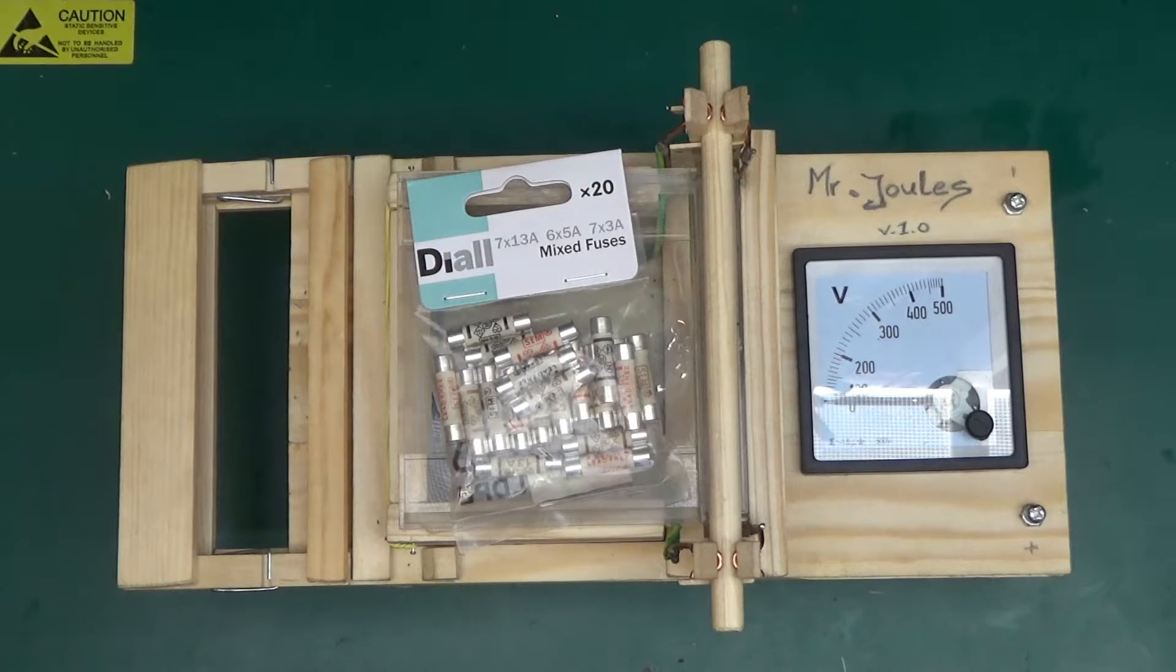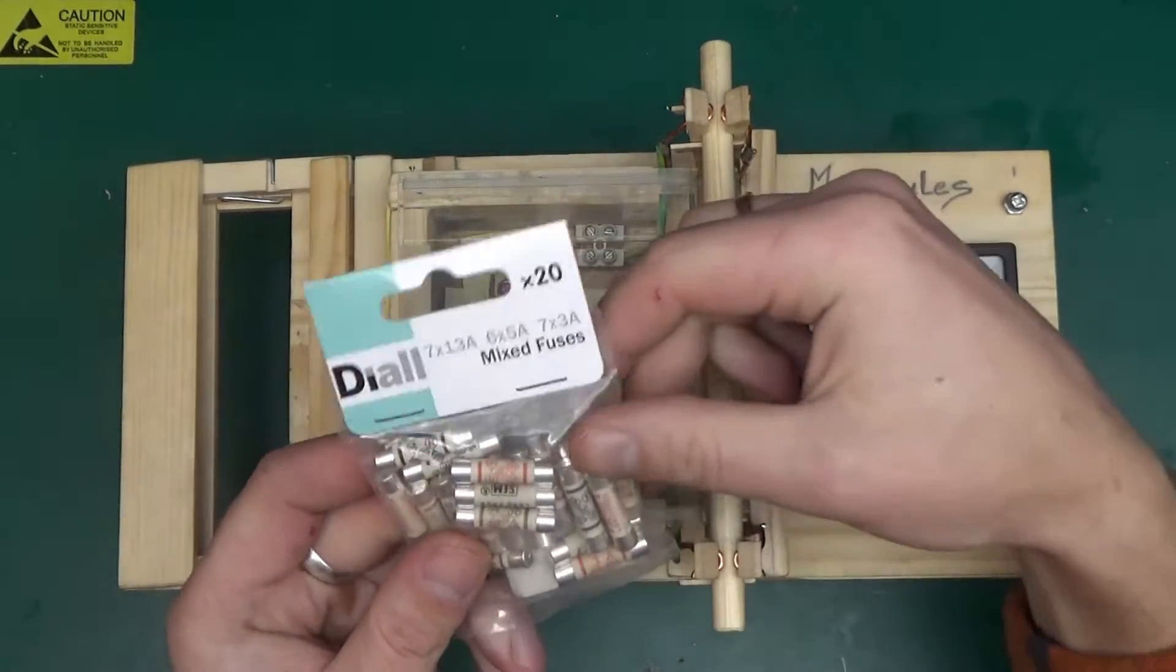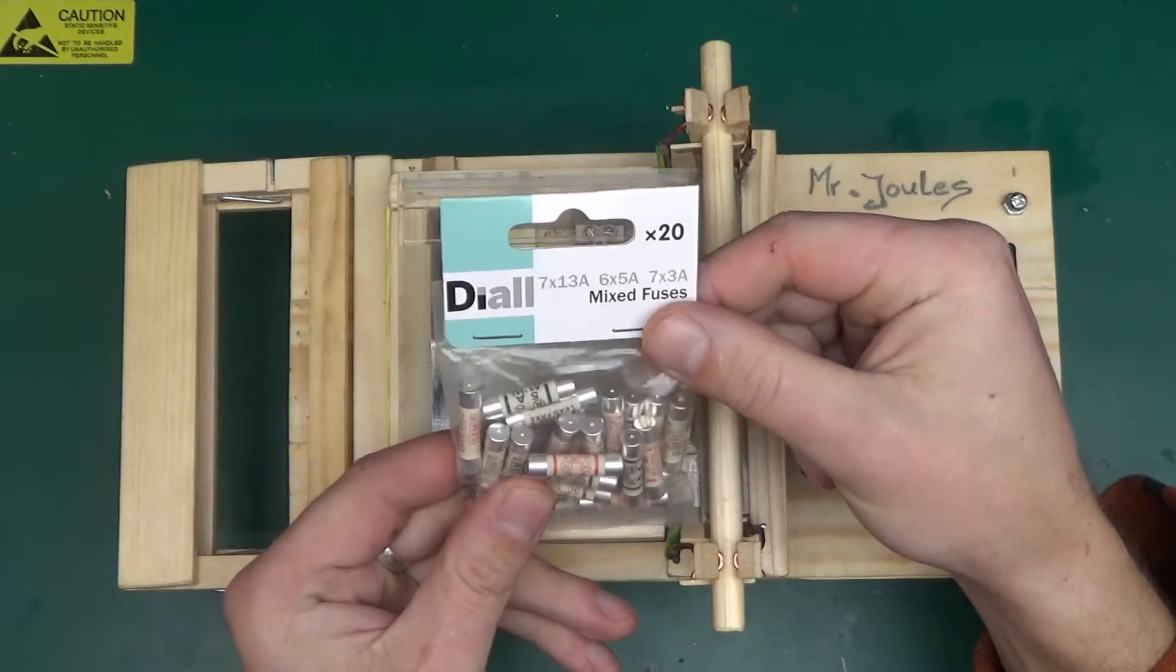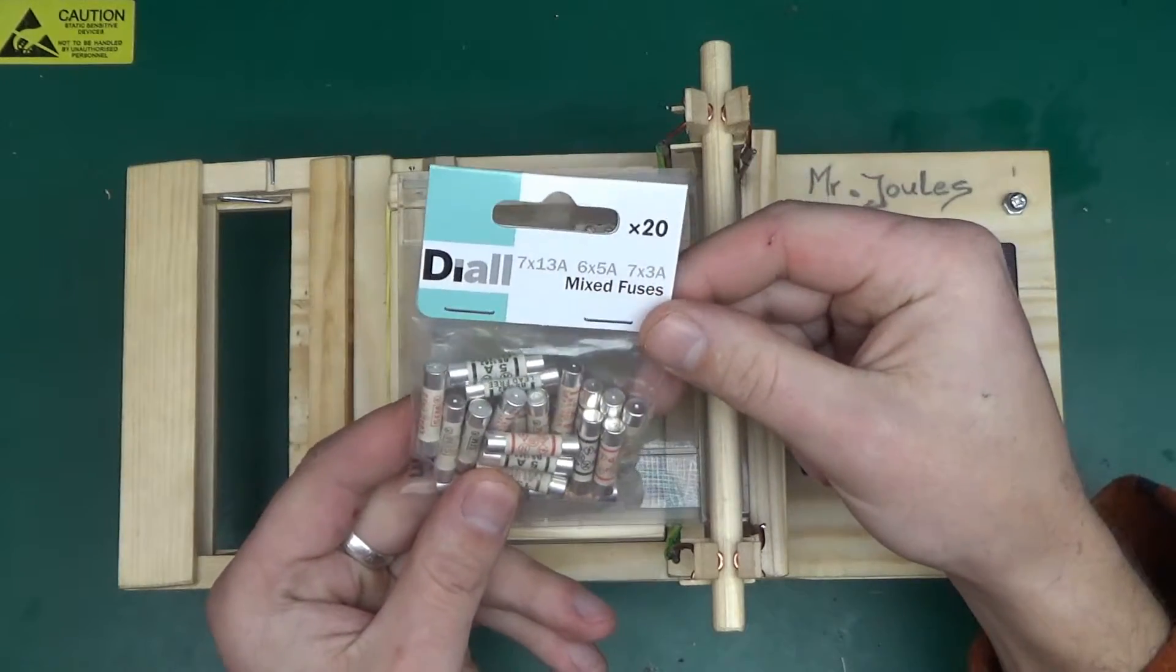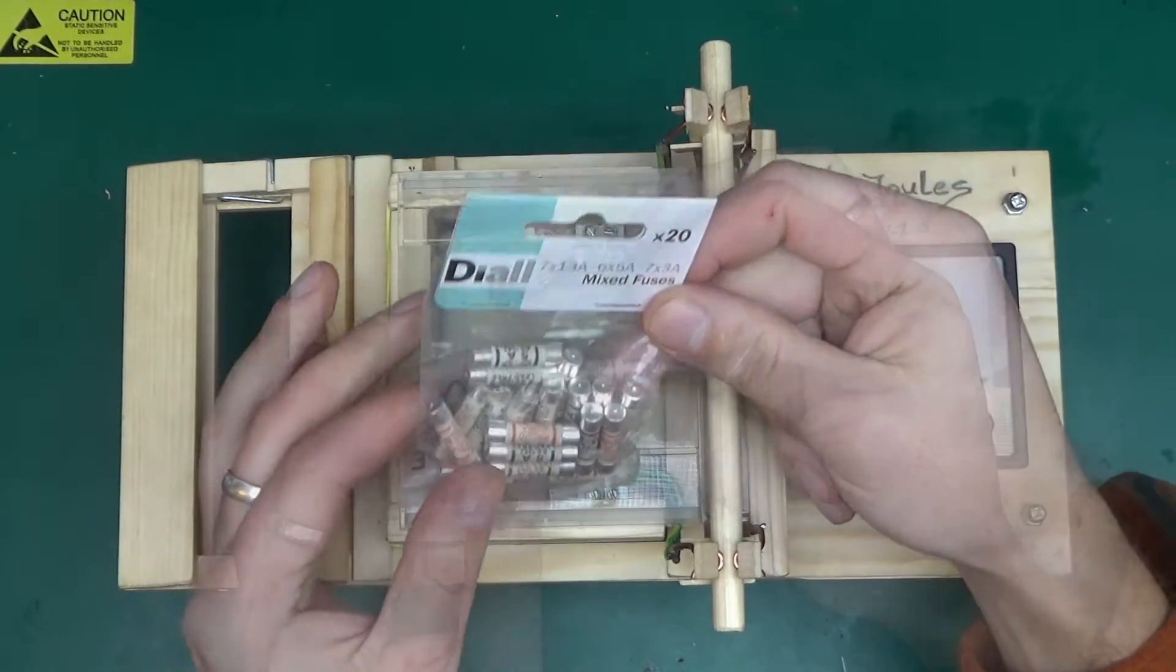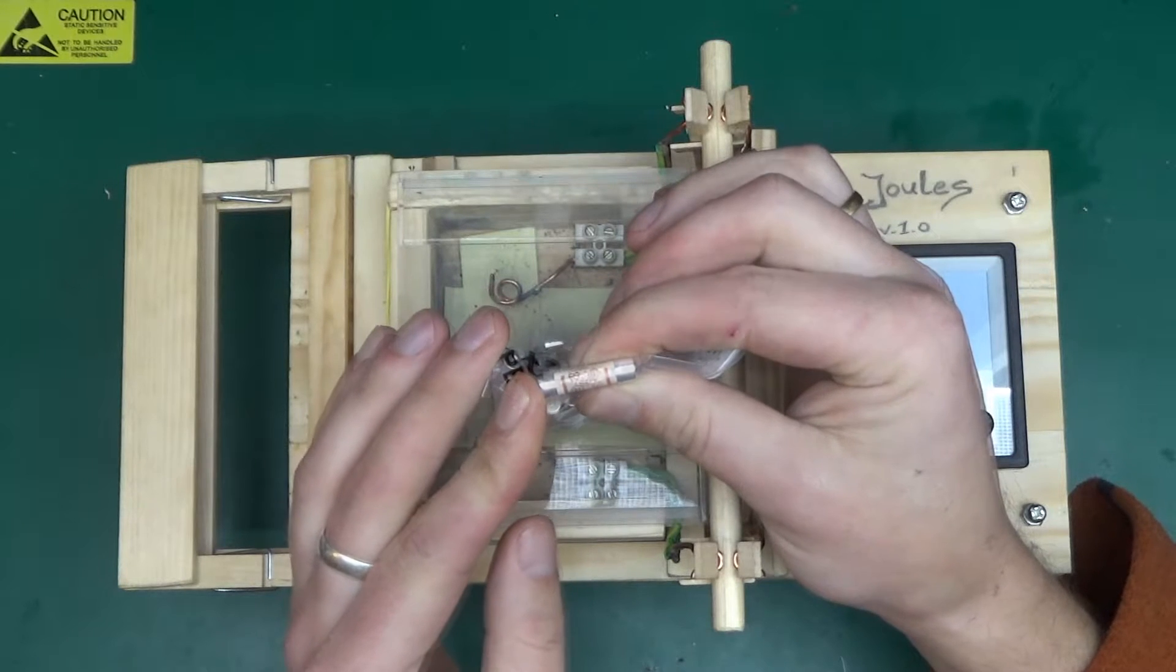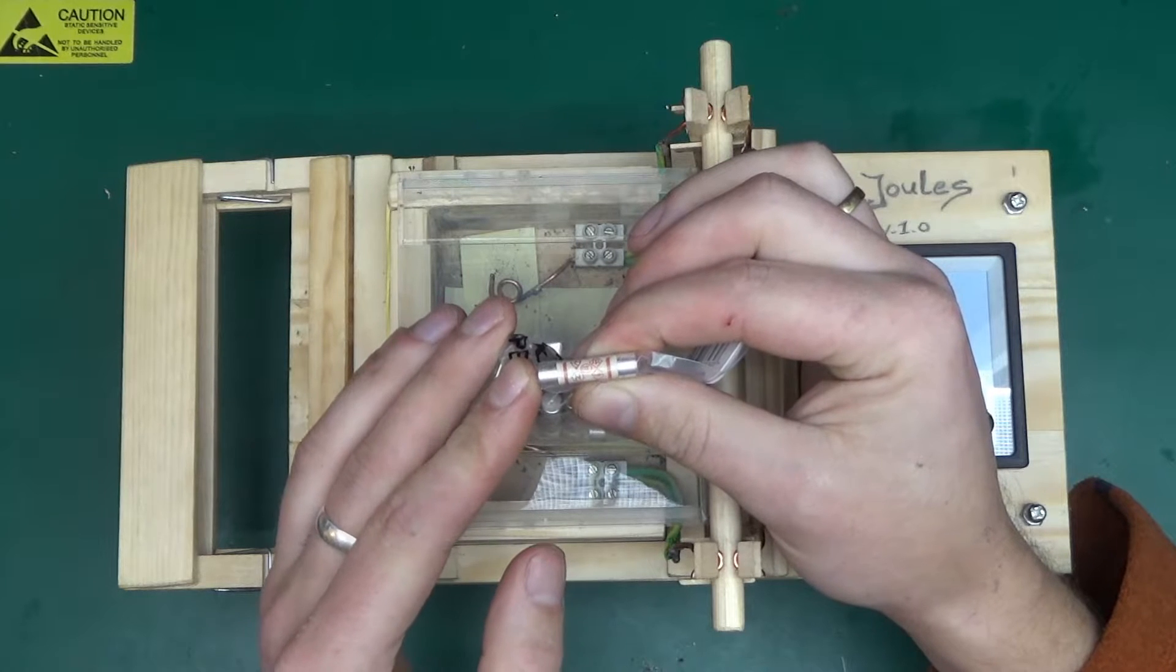So I went and got a pack of fuses. Those are BS 1362 standard fuses commonly found in all the plugs in UK. I've got 13 amp, 5 amp and 3 amp fuses. Those being ceramic, they are a lot harder in terms of what they can withstand. They are a lot tougher than just simple glass fuses.